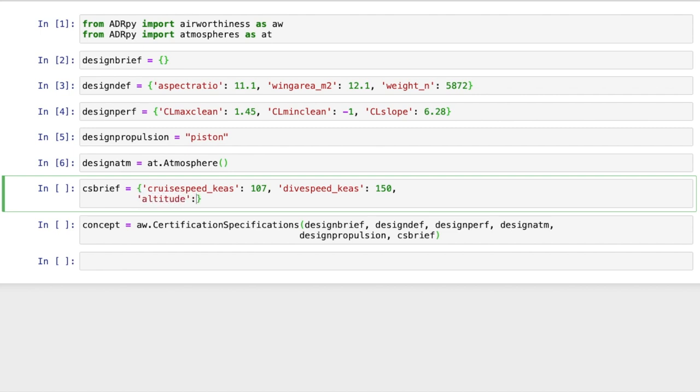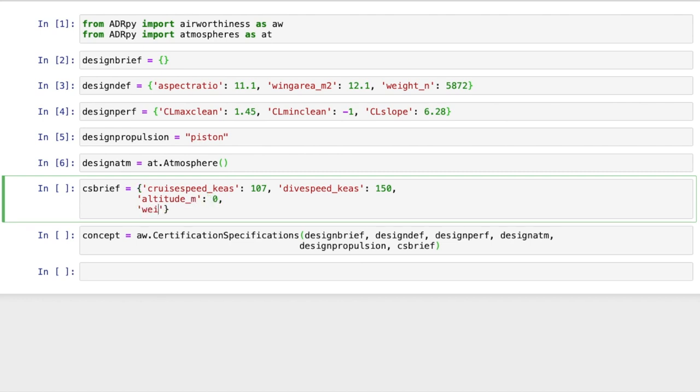We also need to state the flight conditions where we want to draw up the diagram, specifically the altitude and the fraction of the maximum takeoff weight defined earlier, where we want to generate the diagram. Diagrams are typically generated for several combinations of these figures, more on which shortly. We'll use sea level and the full maximum takeoff weight here.